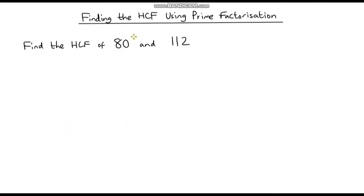I'm going to go through another example — finding the highest common factor of 80 and 112 using prime factorization. But before I do, I encourage you to pause the video and give it a go yourself.